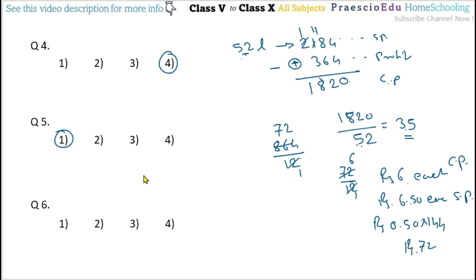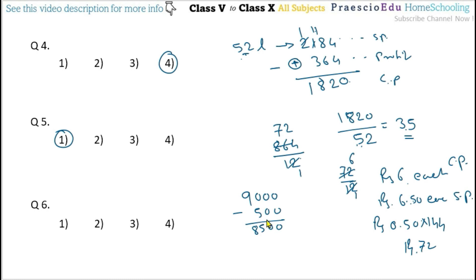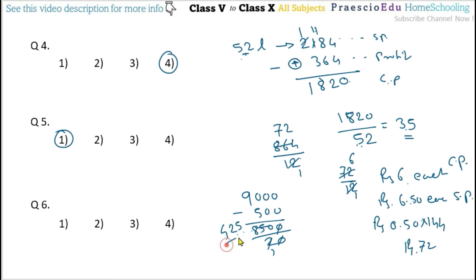Question number 6. A shopkeeper sells 20 watches for rupees 900 each and makes a profit of rupees 50. What is the CP of a watch? SP is 900, profit is 50, so CP per watch equals 900 minus 50 = 850. For 20 watches that is 8500. Dividing 8500 by 20 gives 425. So rupees 425 is the cost price of one watch, given in option number 2.